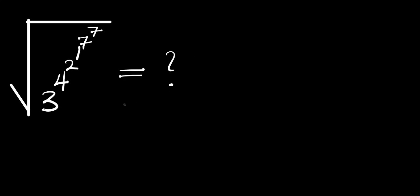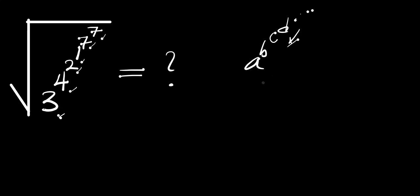Hello, you are welcome. In this video we are going to simplify this and find the final answer. We have 3 raised to the power of 4, raised to the power of 2, raised to the power of 1, raised to the power of 7, and finally raised to the power of 7. This is in the form of a^b^c^d and so forth. What you simply do is start from the top then go downwards. The first two numbers here are simply 7 power 7.